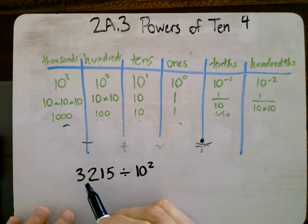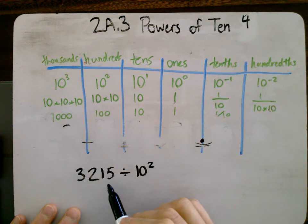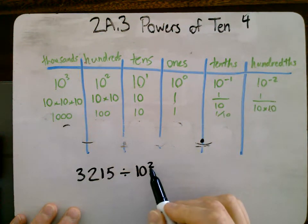Okay, here we go, part four. We've got this number 3215 divided by 10 to the power of 2.